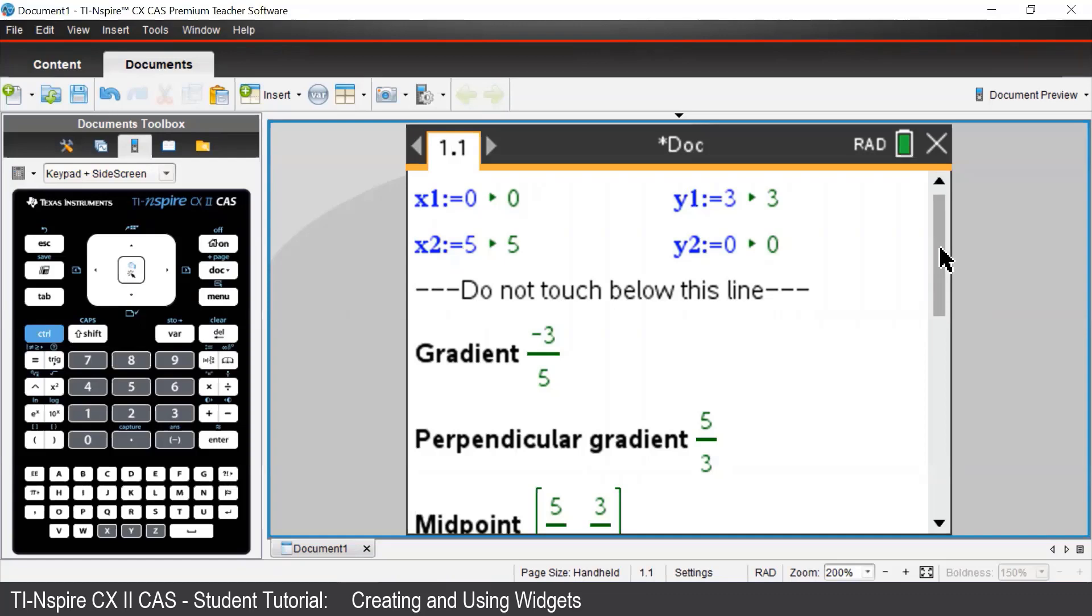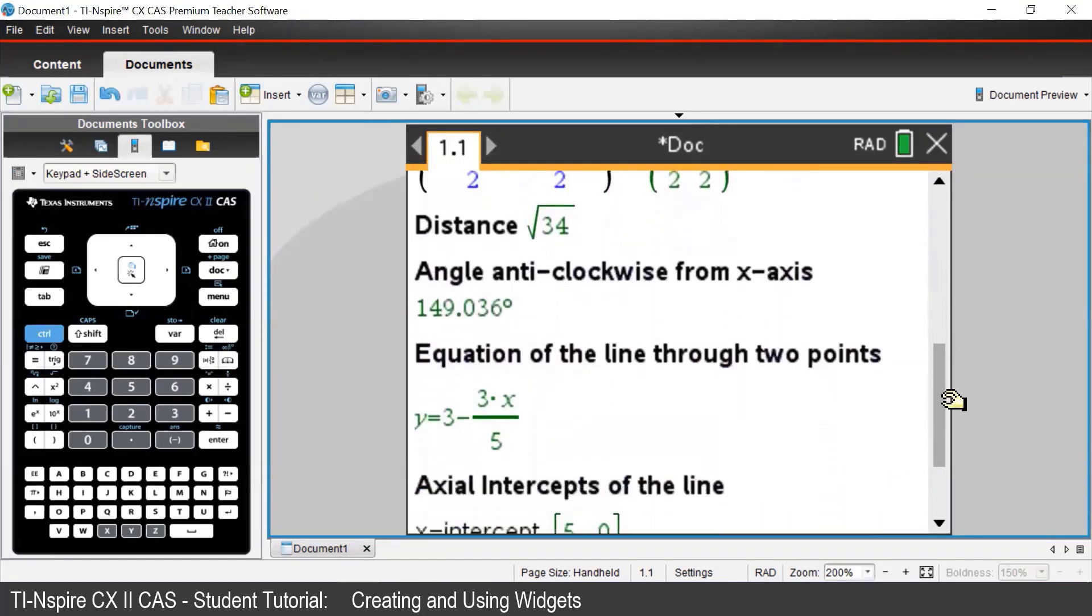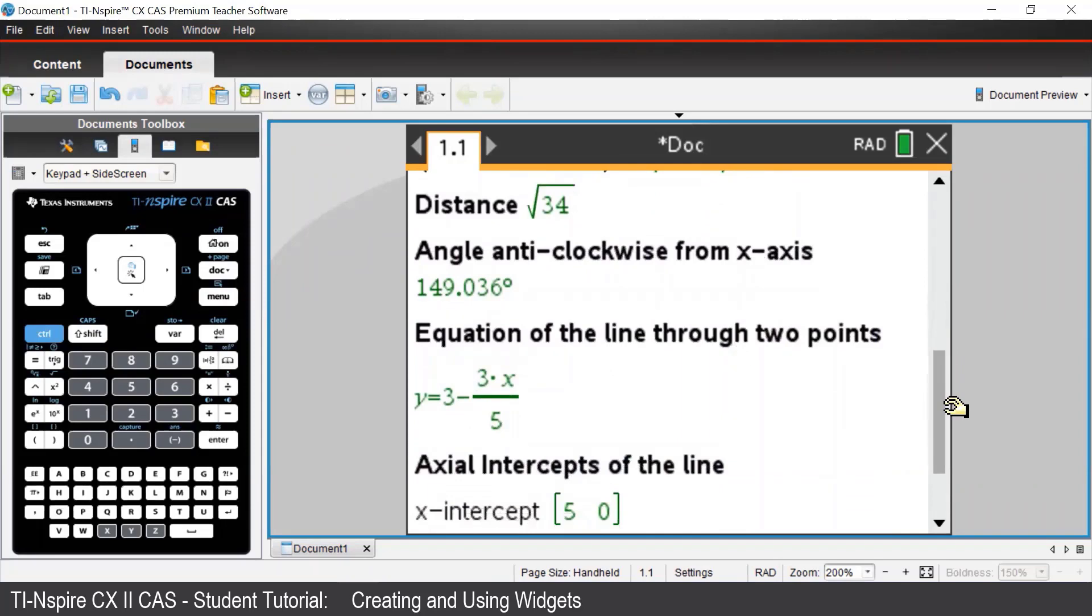For example, this is a widget where we can input the coordinates of two points x1 y1 and x2 y2, and it calculates the gradient, the midpoint, distance, as well as the equation of the line through the two points.